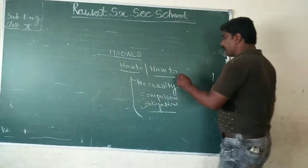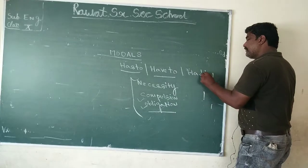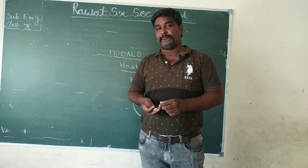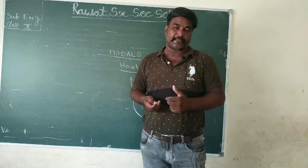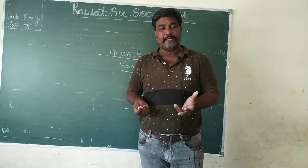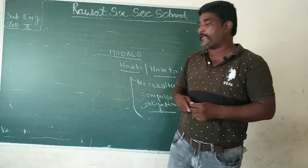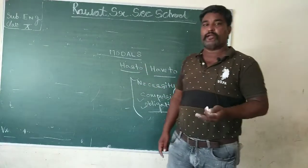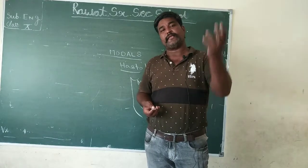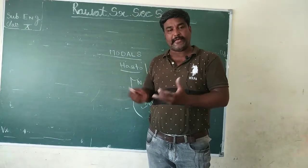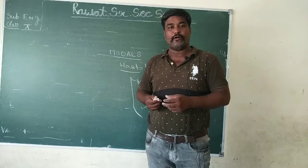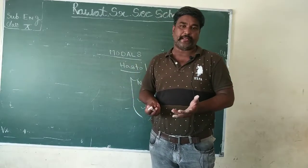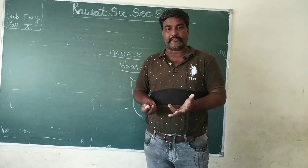The past form of 'has to/have to' is 'had to'. For example: 'Kal mujhe achanak Delhi jaana pada' — I had to go to Delhi yesterday suddenly. That is talking about past compulsion, past obligation. Also, 'has to/have to' can relate to strong advice. For example: my train is at 5am tomorrow, I have to get up early in the morning — or I must get up early in the morning. That becomes a kind of strong advice.